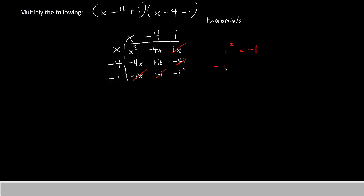So that negative i squared is the same thing as negative of negative 1 or positive 1. So we'll replace the negative i squared with positive 1.